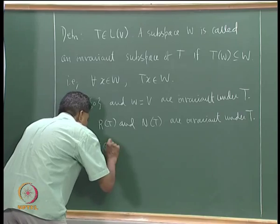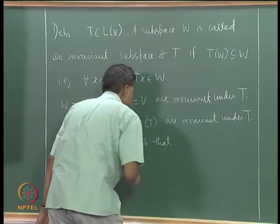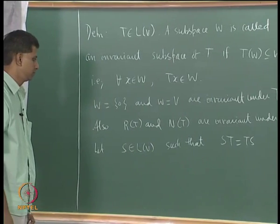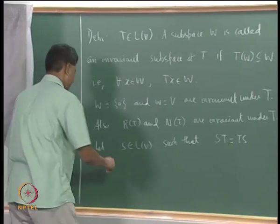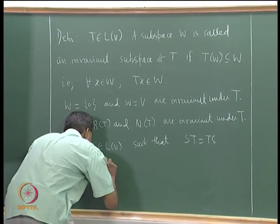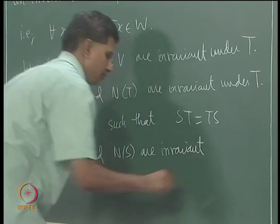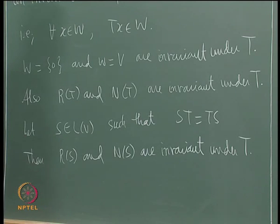Let S be a linear operator on V such that ST equals TS — S is an operator that commutes with T. Then the range and the null space of S are also invariant under T. For us T is fixed; S is an operator that commutes with T, and then range and null space are invariant under T. All these are little exercises for you to verify.